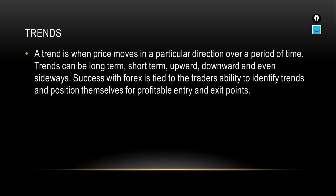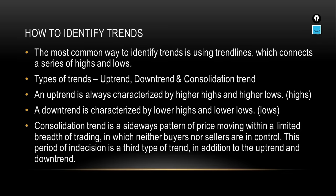The most common way to identify trends is using trend lines, which connect a series of highs and lows. As we go along with the lesson I'll show you practical examples. The three types of trends are: uptrend, downtrend, and consolidation trend. Let me show you what the difference is between those three.